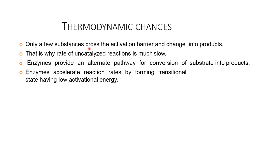Only a few substances cross the activation barrier and change into product, which is why the rate of an uncatalyzed reaction is much slower. The enzyme provides an alternate pathway for the conversion of substrate into product. Enzymes accelerate the reaction rate by forming a transitional state having low activation energy. Hence the reaction rate is increased many fold in the presence of the enzyme. The total energy of the system remains the same and the equilibrium state is undisturbed.